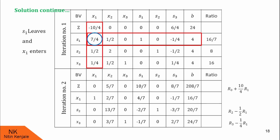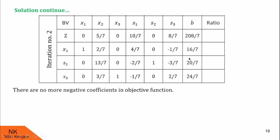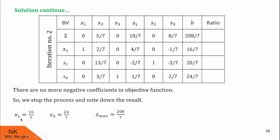Now we check: is there any negative number in the row of z? No, there is no negative number, so we stop the process and write the final solution. The solution is x1 equals 16 by 7, x3 equals 24 by 7, and z equals 208 by 7. We substitute these values into the objective function, and since x2 does not appear as a basic variable, x2 equals 0. So the complete solution of this LPP is x1 equals 16 by 7, x2 equals 0, x3 equals 24 by 7, and the optimum value of z is 208 by 7.